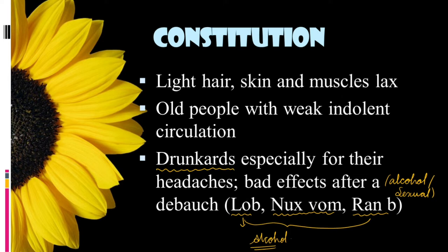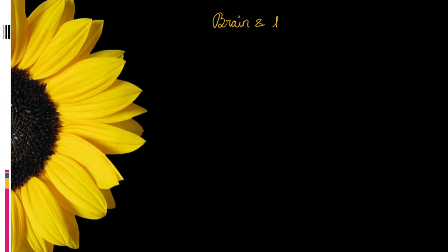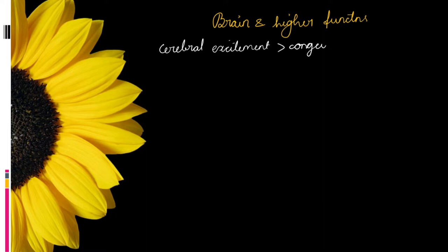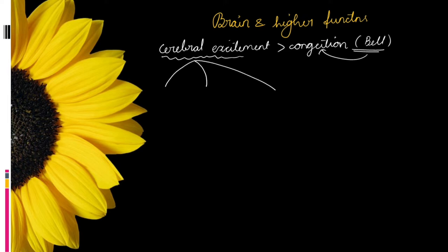To make this discussion interesting, let us name the Agaricus patient as Babu. Babu shows more symptoms of cerebral excitement than congestion. The drug Belladonna represents cerebral congestion symptoms, while Babu has cerebral excitement. This excitement is divided into four stages, similar to alcoholic intoxication. In the first stage, Babu has slight excitement.